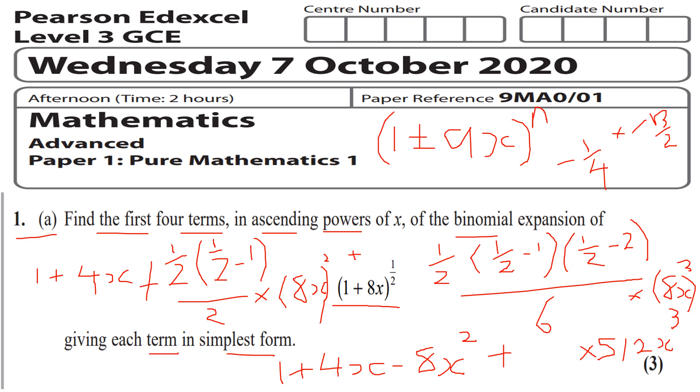So I'll have one sixteenth times this and then I'll do the bus stop method. For the numerical part of x³: 16 into 5 doesn't go, 16 into 51 goes three times with remainder of three, and then 16 into 32 goes twice. So it will be plus 32x³.